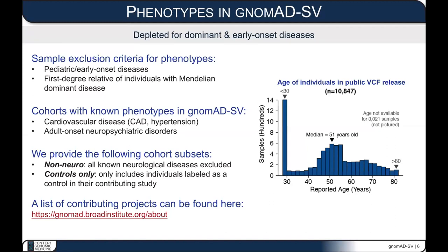To allow you to use this dataset to analyze cases with those particular phenotypes, we provide subsets of the cohort labeled the non-neuro subset — a subset of samples with all neurological diseases excluded — and also a controls-only subset of individuals specifically labeled as control subjects from their contributing studies. There's a URL at the bottom of this slide to look up which projects have or have not contributed. There are over 90 different sequencing projects that have contributed, so it's quite a diverse dataset.